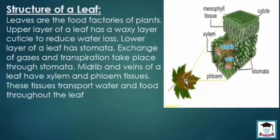Patte ki upar wali satah ke andar ek wax ki layer maujood hoti hai, jise cuticle kaha jata hai. Iska kaam paani ka bhaap mein tabdeel hona rokna hai. The lower layer of a leaf has stomata. Transpiration aur gases ka tabadla bhi stomata ke zariye hota hai.